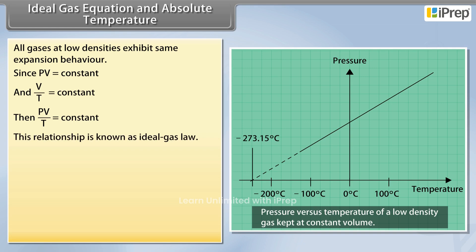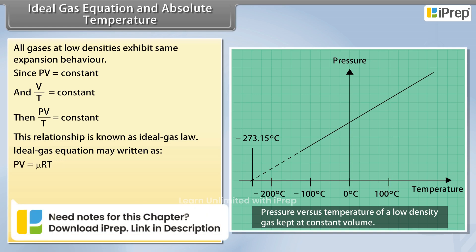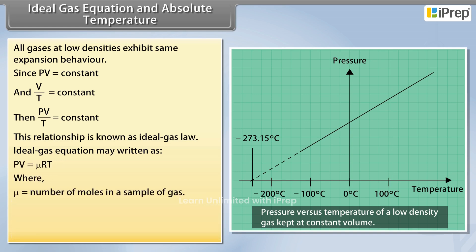This relationship is known as Ideal Gas Law. Ideal Gas Equation may be written as PV is equal to mu RT, where mu is equal to number of moles in a sample of gas and R is equal to universal gas constant.